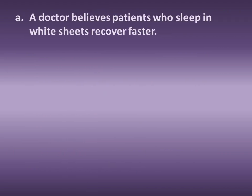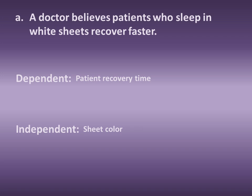The first one: a doctor believes patients who sleep in white sheets recover faster. There are two possible variables — sheet color and recovery time. Which one is the doctor interested in? The doctor is interested in recovery time. What he's going to manipulate is the sheet color — maybe he'll use blue, green, tan — and then look at the recovery time of the patient. So the dependent variable is the recovery time of the patient, and the independent variable is the color of the sheets.